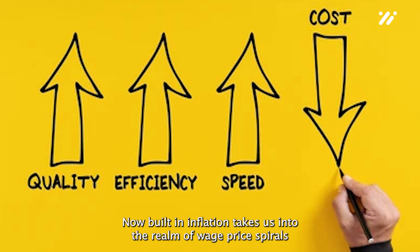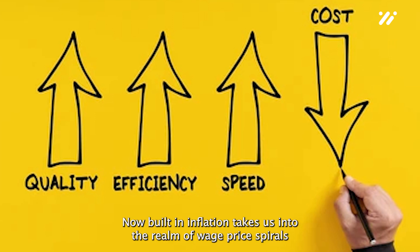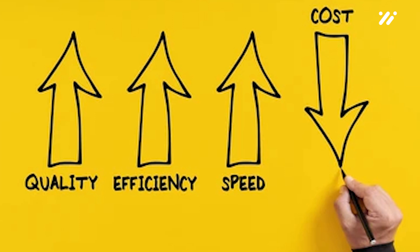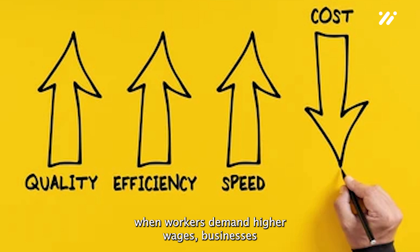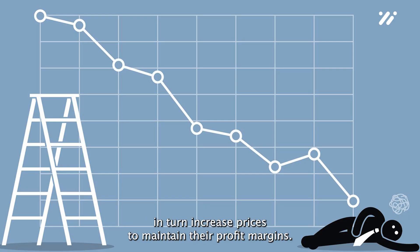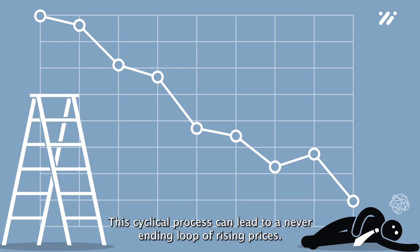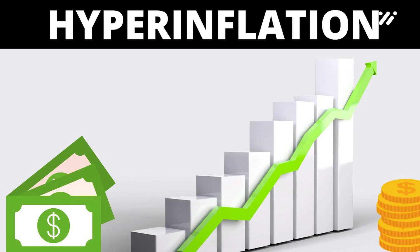Built-in inflation takes us into the realm of wage-price spirals. When workers demand higher wages, businesses in turn increase prices to maintain their profit margins. This cyclical process can lead to a never-ending loop of rising prices.